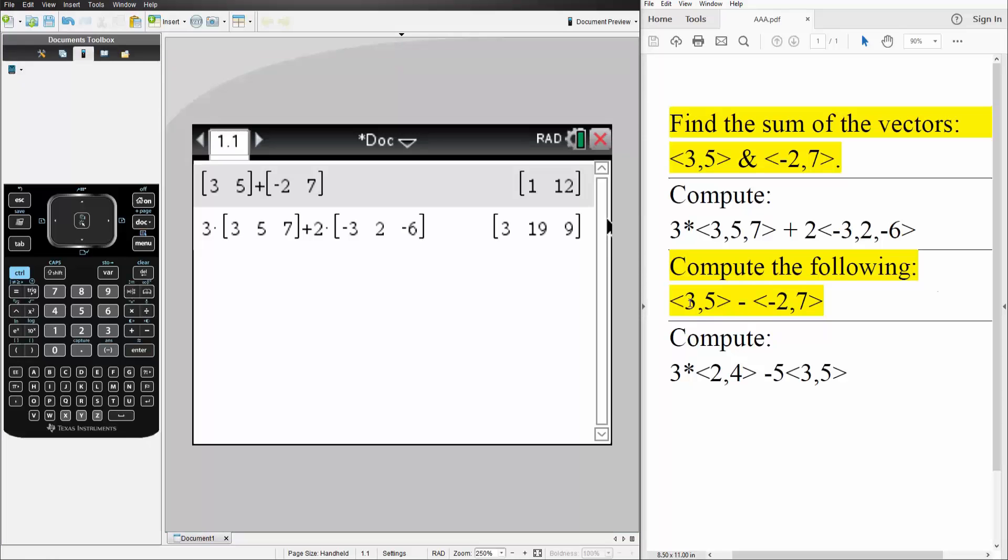And now for the third question. Compute the following. This time, it's going to be subtraction. So we do control square brackets, 3, 5. We do minus square bracket. We have negative 2, 7. We hit enter. So this is the third answer for this question.